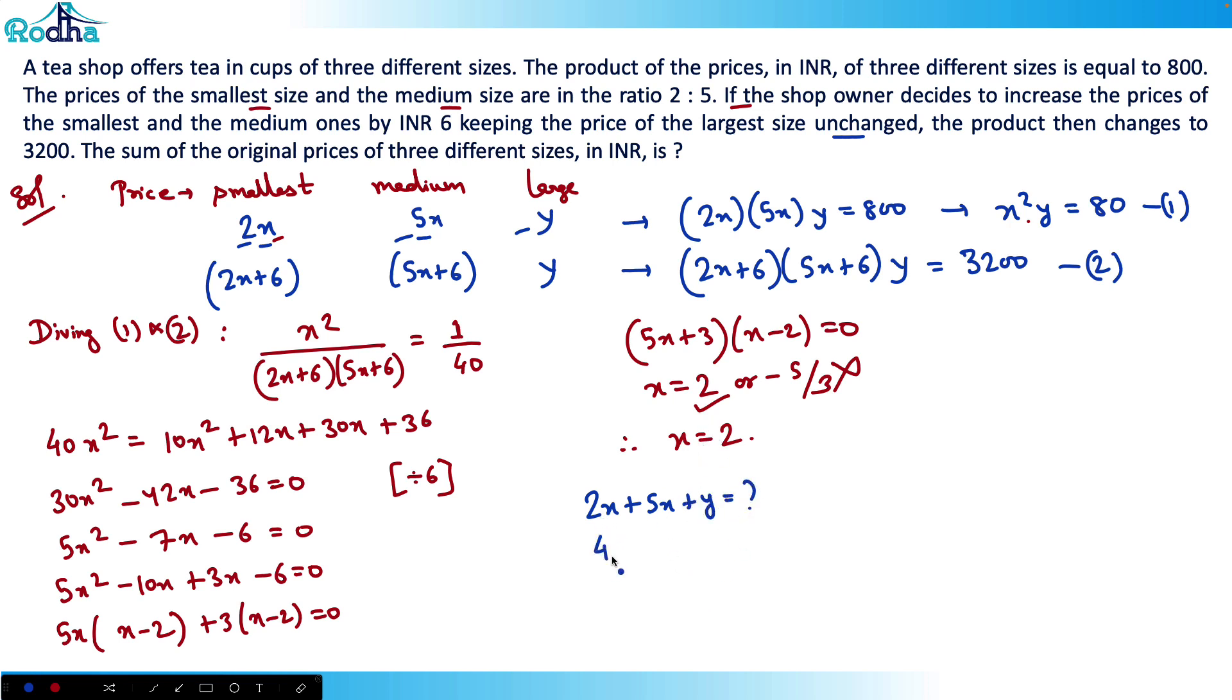x is 2, so 2x becomes 4, 5x becomes 10. What is y? 4 × 10 × y = 800, therefore y = 20. So 4 + 10 + 20 = 34 is the answer for this question.